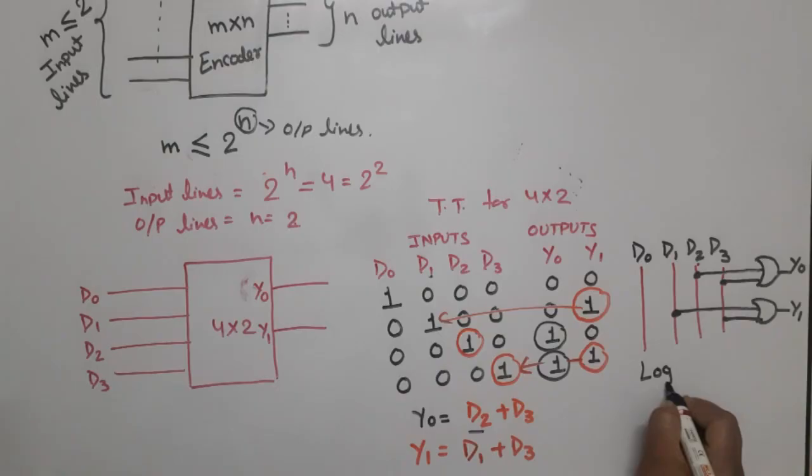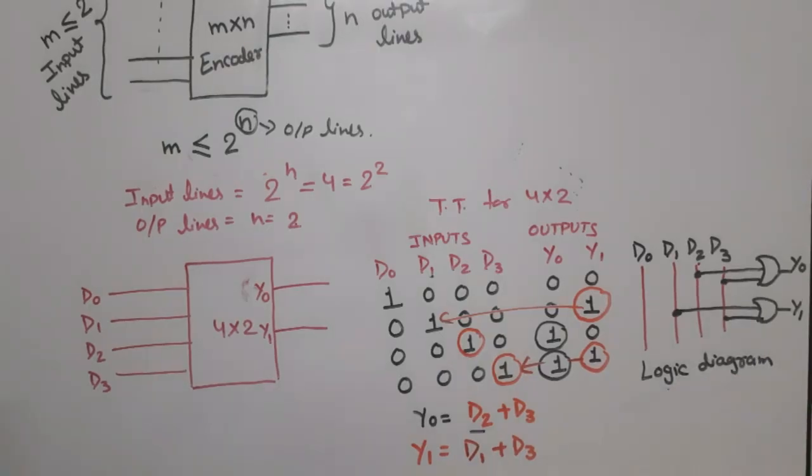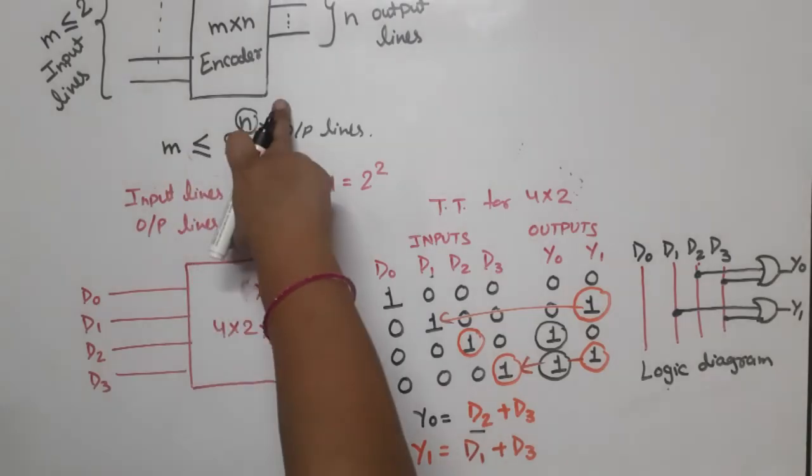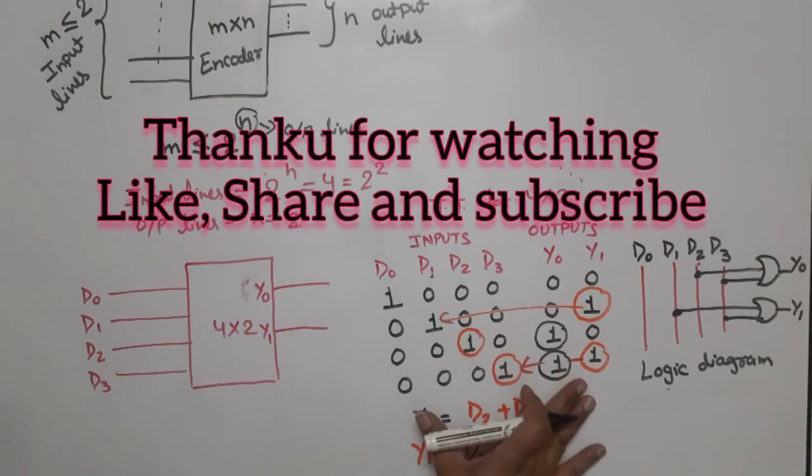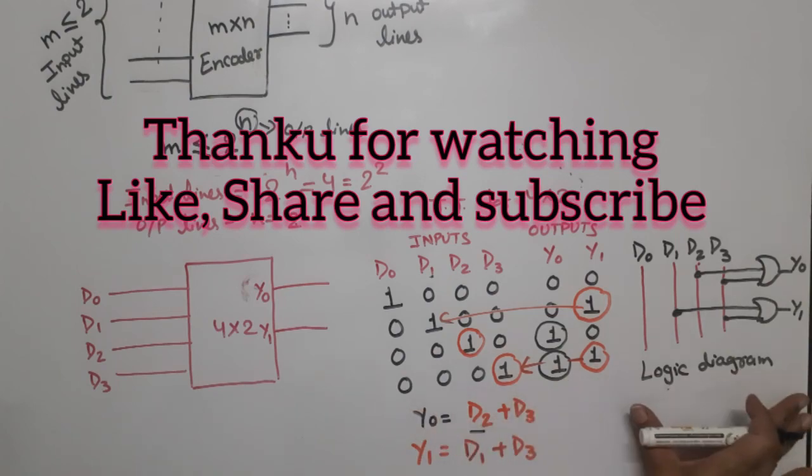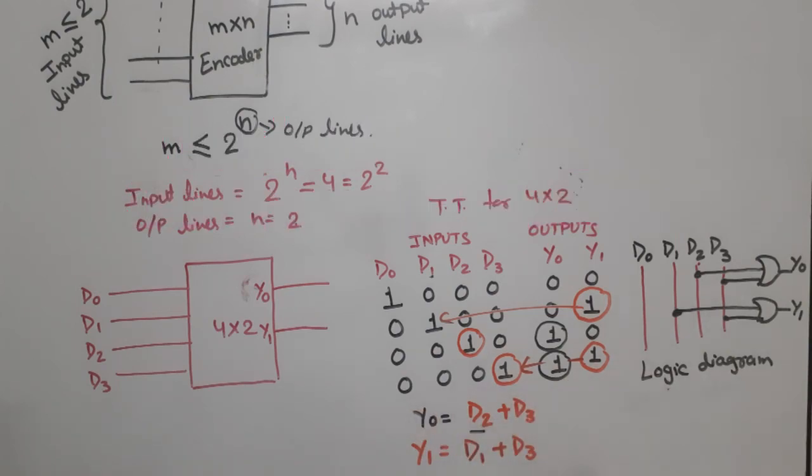Now I think it's clear. This is the general block diagram, this is the block diagram for 4-to-2, and this is the logic diagram and equation for 4-to-2. If you still have any doubt, please write in the comment section. Thank you.